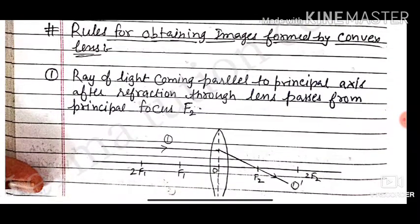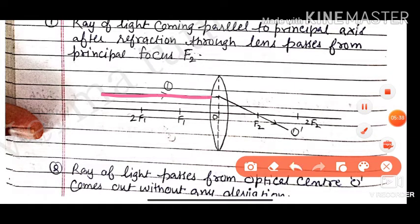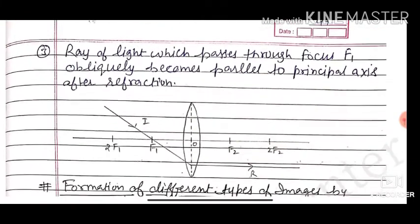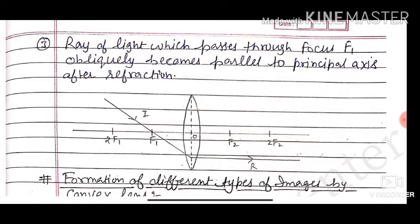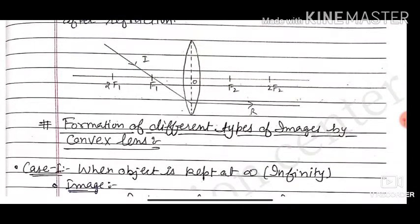Rules for obtaining images by a convex lens: First, a ray coming parallel to the principal axis after refraction passes through principal focus F2. Second, a ray passing through the optical center goes straight without any deviation. Third, a ray passing obliquely through focus F1 becomes parallel to the principal axis after refraction — this is the opposite of the first rule.